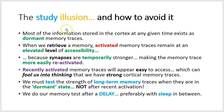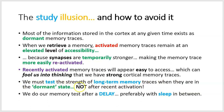The study illusion and how to avoid it: most information stored in the cortex at any given time exists as dormant memory traces. A memory is a pattern of strengthened synapses from a learning episode. When we retrieve a memory, activated memory traces remain at an elevated level of accessibility because synapses are temporarily stronger, making the trace more easily reactivated. Recently activated memory traces appear easy to access, which can fool us into thinking we have strong cortical memory traces. We must test long-term memory traces when they are in the dormant state — after a delay, preferably with sleep in between.